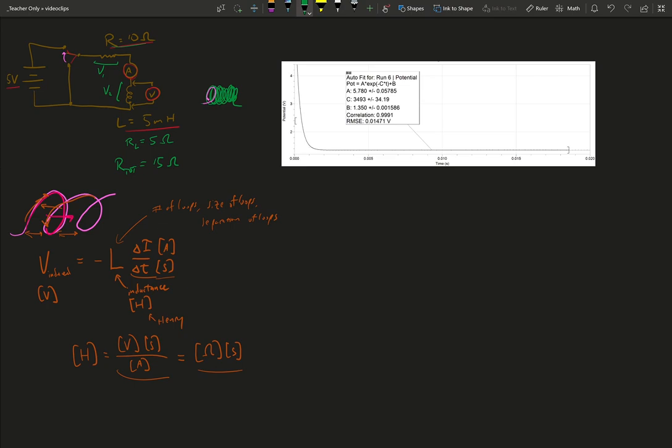Now we have this parameter C that exists in this. So we're looking at V as a function of time is equal to some A times e to the minus C times t and then there is this final plus B. Make that look more like a times t.